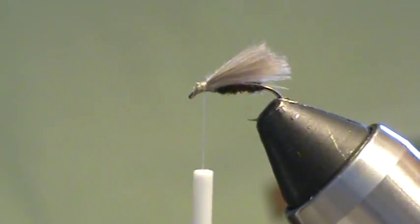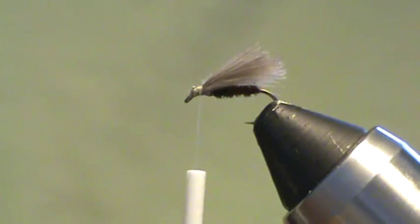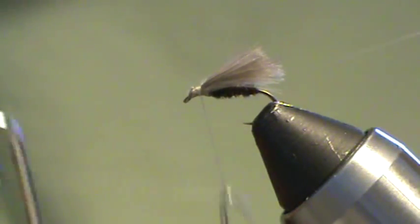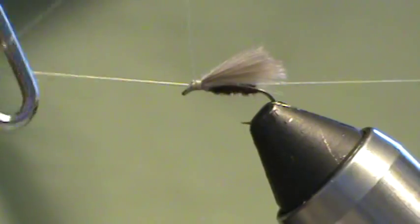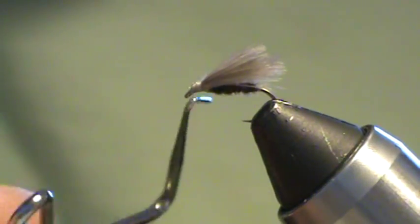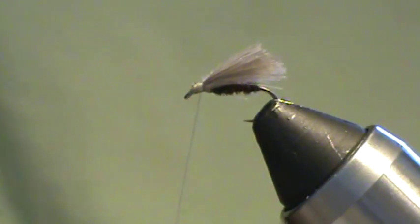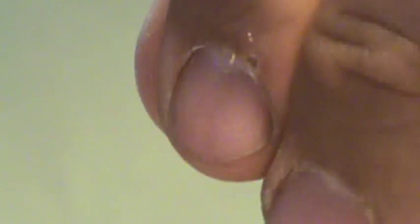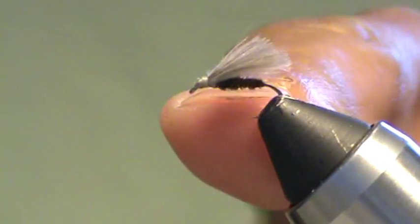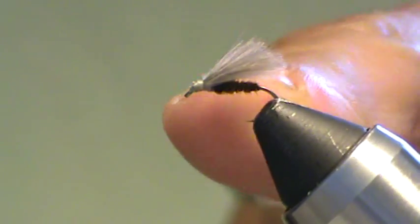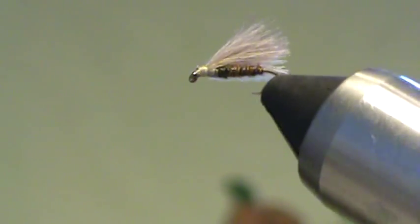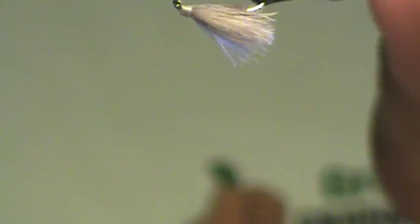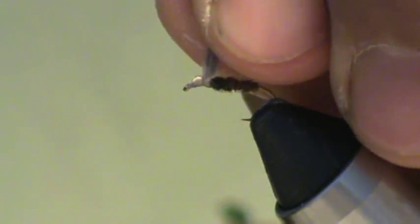Wings laying nice and low with the body - that's good. Then come in and whip finish, trim away. That's it, that's all there is to the F fly. Like I said, you can even use synthetic materials for the body or anything else that you want to use, but this is an olive-dyed pheasant tail.